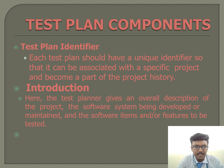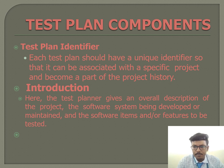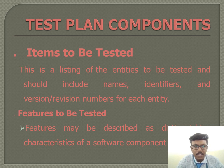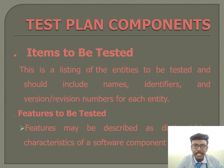Next is items to be tested. This is a listing of the entities to be tested and should include names, identifiers, and version or revision numbers for each entity, so that in later stages it is easy to understand. References to the appropriate documents and the user's manual should be included. The test planner should also include items that will not be included in the test efforts.